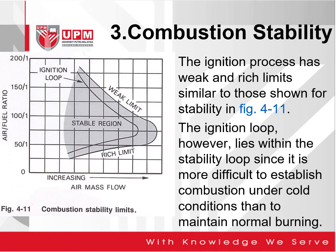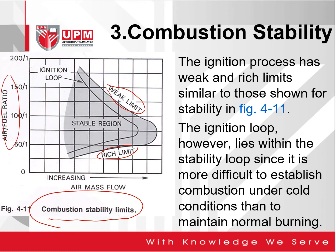Looking at figure 4-11, which shows the combustion stability limits, we have the stable region where the rich limit and the weak limit are indicated with regards to the air-fuel ratio. The ignition process also has weak and rich limits, similar to those shown here. The ignition loop lies within the stability loop, since it is more difficult to establish combustion under cold conditions than to maintain normal burning. This is plotted against the increasing air mass flow.